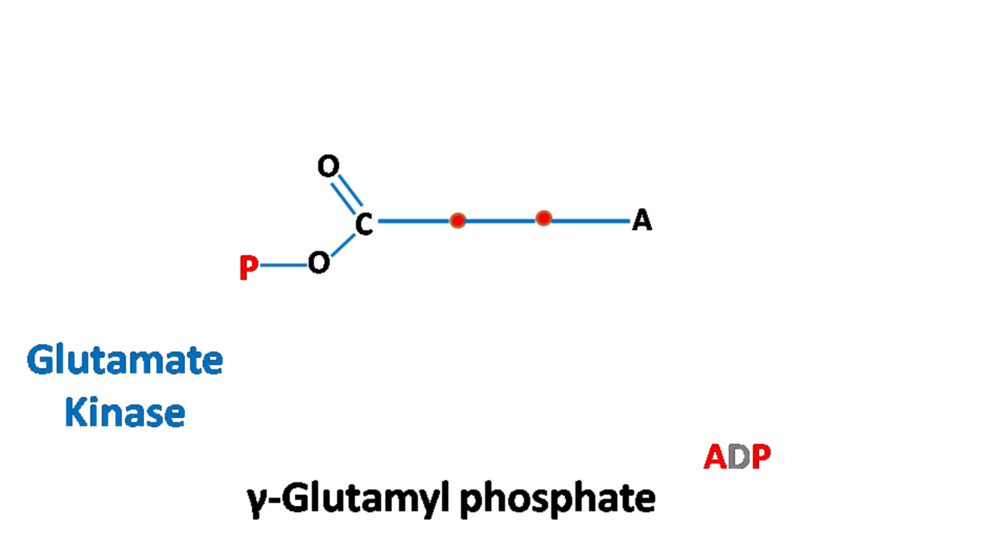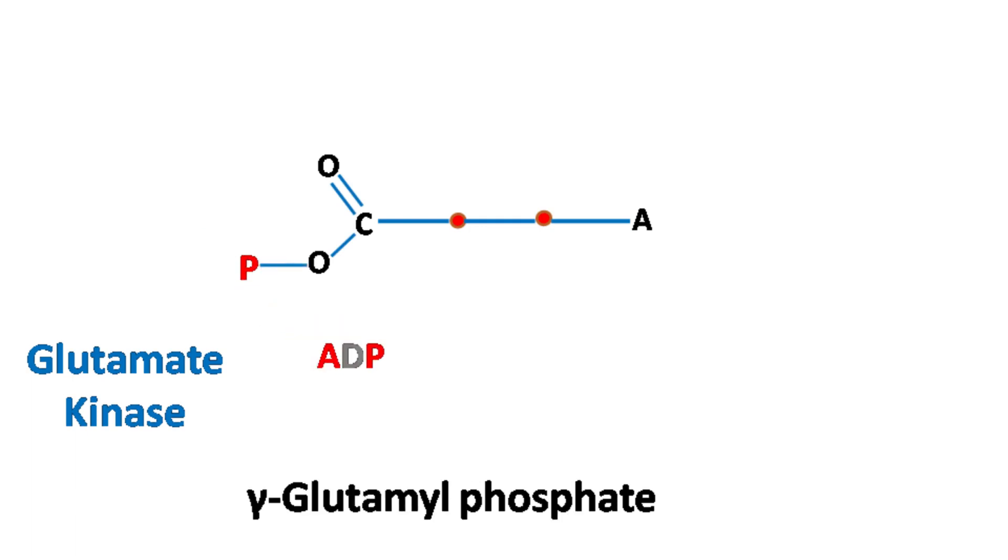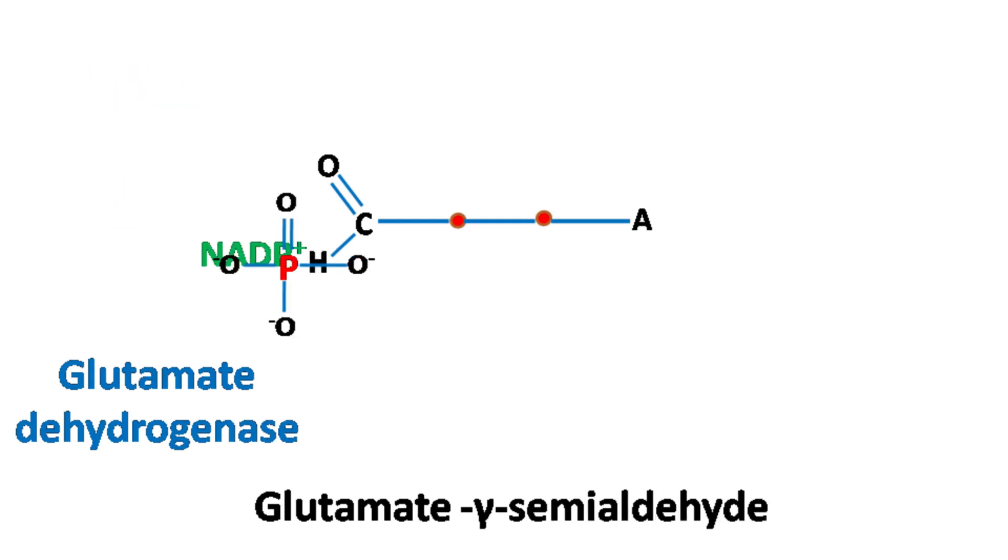Glutamate dehydrogenase then converts gamma glutamyl phosphate to glutamate gamma semialdehyde.